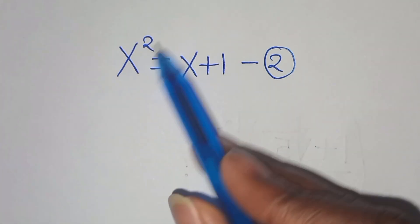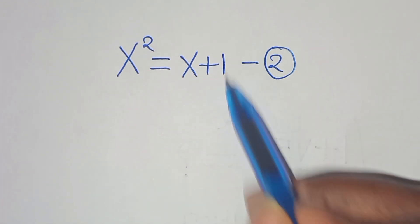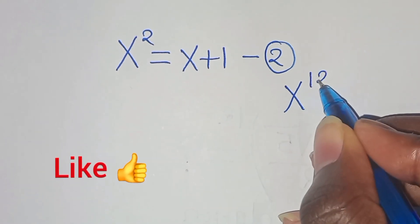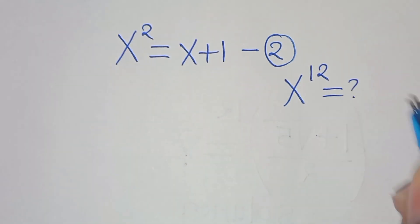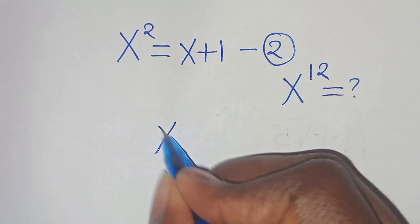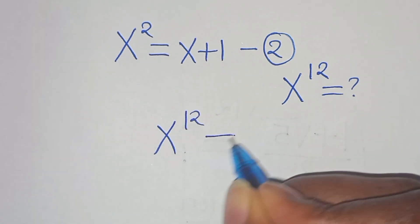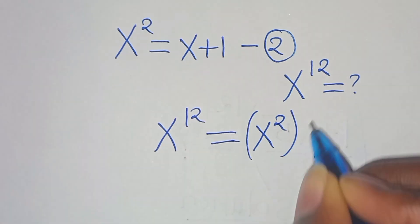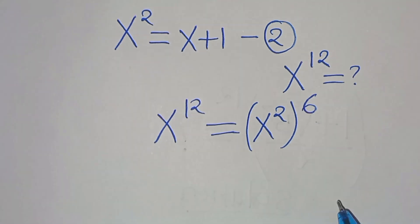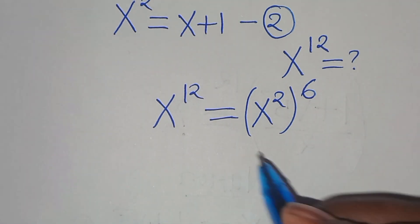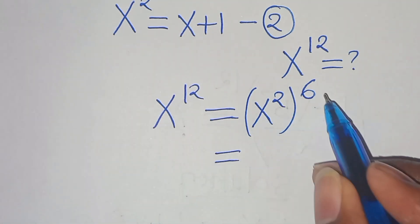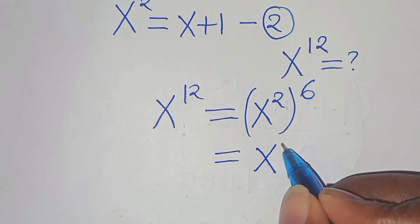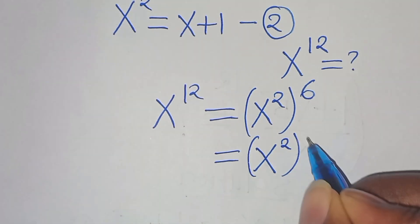Now we have x squared equals x plus 1, and we have to determine x to the power of 12. We know that x to the power of 12 is the same thing as x squared raised to the power of 6, and we can further express this as x squared to the power of 3, raised to the power of 2.